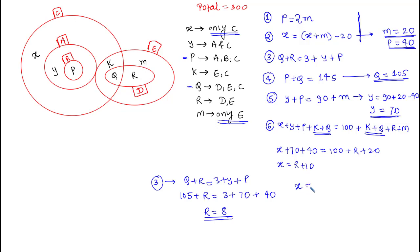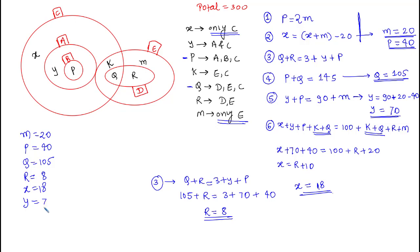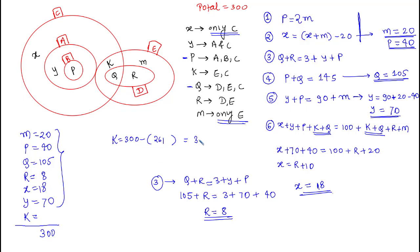So far we have: m = 20, p = 40, q = 105, r = 8, x = 18, y = 70. The only remaining variable is k. Since the total is 300, k = 300 − (sum of all others). The sum of x + y + p + q + r + m = 261, so k = 300 − 261 = 39.